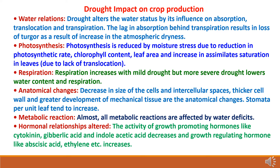Third, respiration increases with mild drought, but more severe drought lowers water content and respiration. Fourth, anatomical changes include decrease in size of cells and intercellular spaces, thicker cell walls, and greater development of mechanical tissues. Stomata per unit area tend to increase. Fifth, almost all metabolic reactions are affected by water deficits. Sixth, hormonal balance is altered: the activity of growth-promoting hormones like cytokinin, gibberellic acid, and indole-acetic acid decreases, while growth-regulating hormones like abscisic acid and ethylene increase.